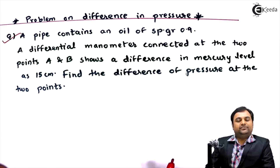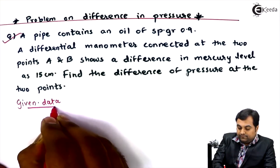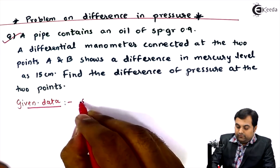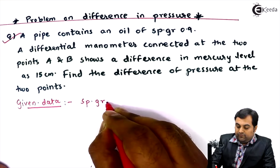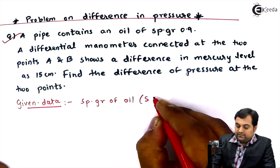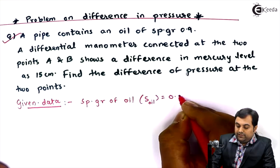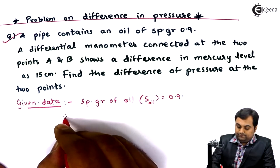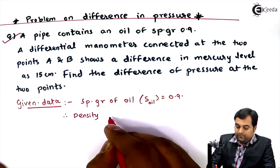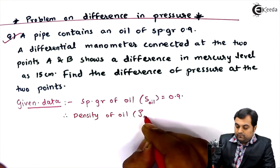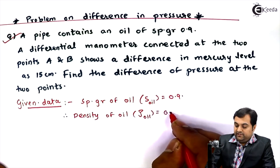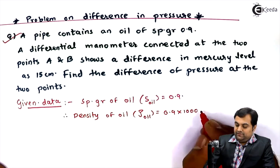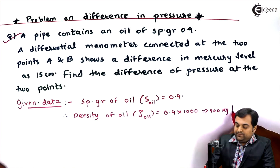Writing the given data: a pipe contains an oil of specific gravity 0.9, so the specific gravity of oil is 0.9. From this we can calculate the density of oil. Density of oil equals specific gravity multiplied by the density of the standard liquid, water, which is 1000 kg/m³. Therefore, density of oil is 900 kg/m³.